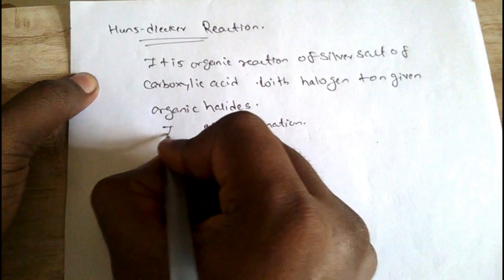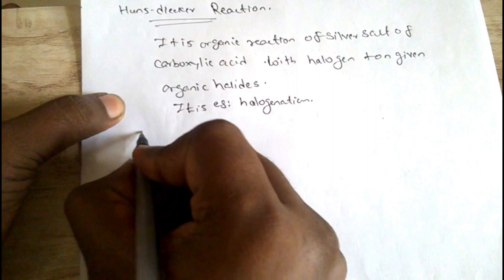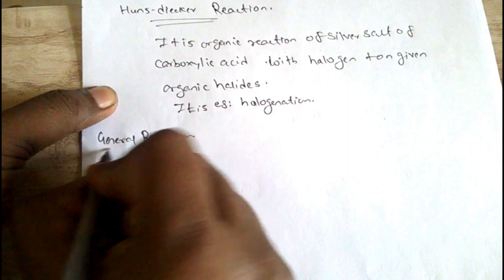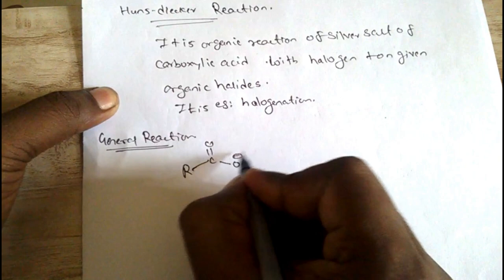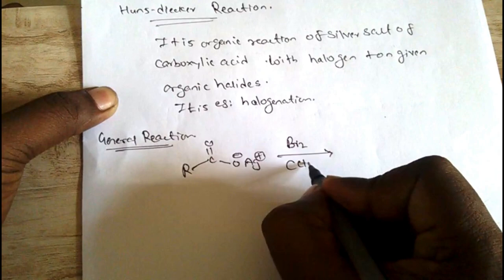Let's see a general reaction. R-COO⁻ Ag⁺ is treated with Br₂ in solvent CCl₄. We get an alkyl bromide.